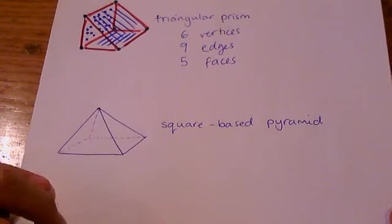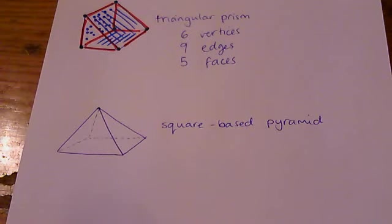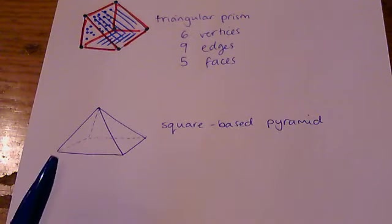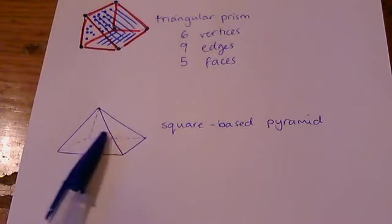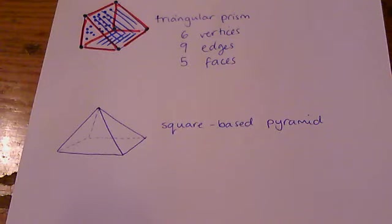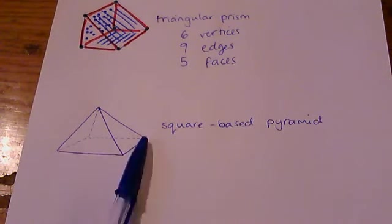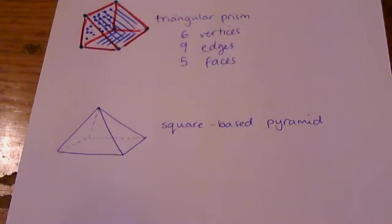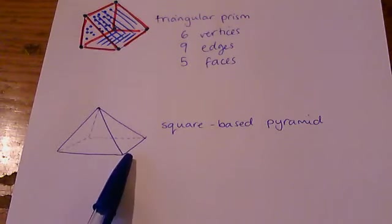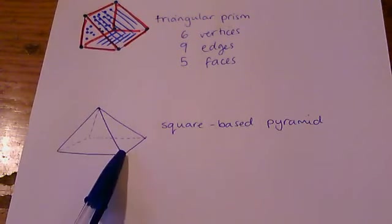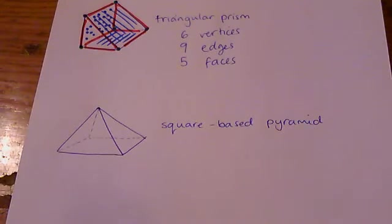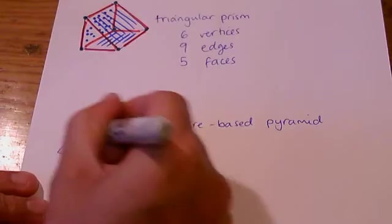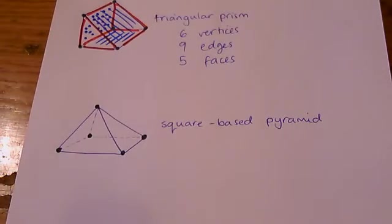Next up we have the square-based pyramid. And this is just recognizable because it's got a square base. I suppose you could have a rectangular-based pyramid as well. Normally they're square-based. And this pyramid, all these lines go up to a point above the base. So how many vertices do we have? 1, 2, 3, 4, 5 vertices.